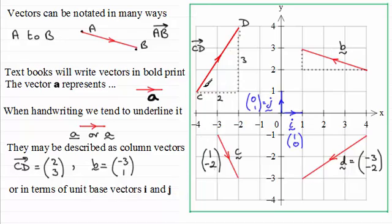So if I wanted to write the vector C to D, in terms of i and j, the unit base vectors, then I'd say C to D was equal to 2i, always do the horizontal first, so that's going to be 2i, then plus 3j. So we've got 2i plus 3j.